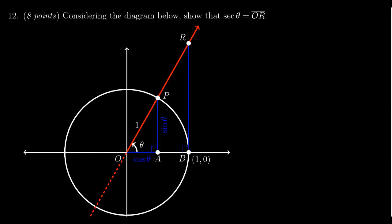There are two right triangles in play here. There's the triangle OAP, which has its sides relative to theta. The opposite side is sine, the adjacent side is cosine, and the hypotenuse is one.